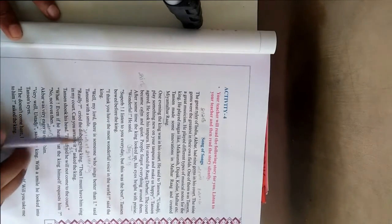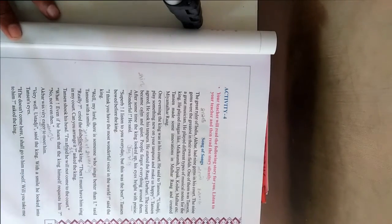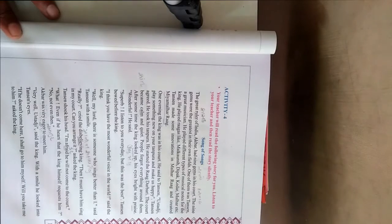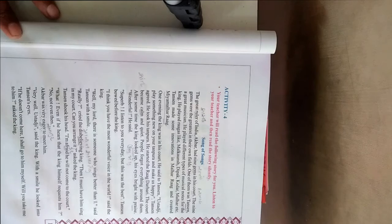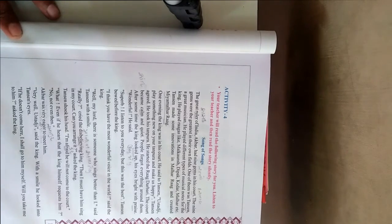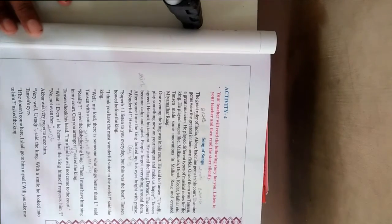Well, my lord, there is someone who sings better than I, said Tansen with a smile. Really? cried the disbelieving king. Then, I must have him sing in my court. Can you arrange it? asked the king. Tansen shook his head. I am afraid. He will not come to the court. But even if he hears that the king himself requests him. No, not even then.